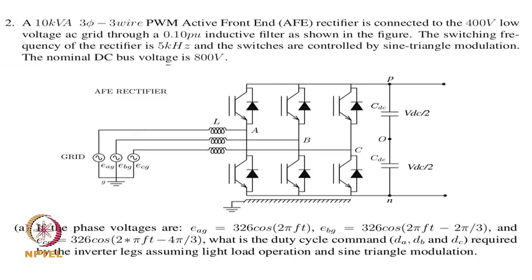The converter is connected to a low voltage AC grid of 400 volts with an inductive filter for interconnection. The filter is 0.1 per unit or 10 percent inductance, the switching frequency of the power converter is 5 kilohertz, and the DC bus voltage has a nominal value of 800 volts.